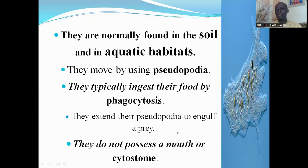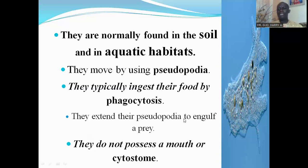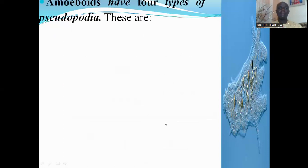The amoeboid protozoans do not possess a cell mouth, called the cytostome. As such, they can feed with any part of their membrane. Any area that food is close to forms a pseudopod and engulfs the food.